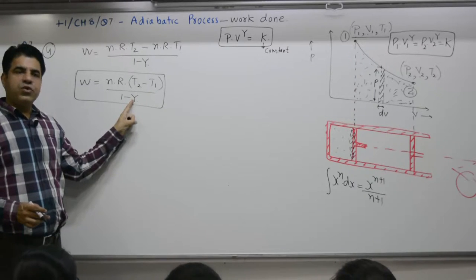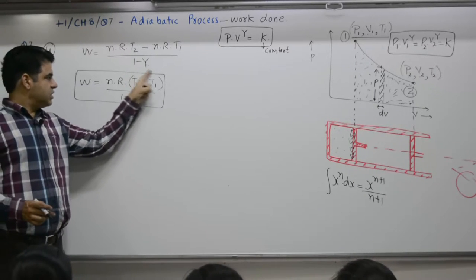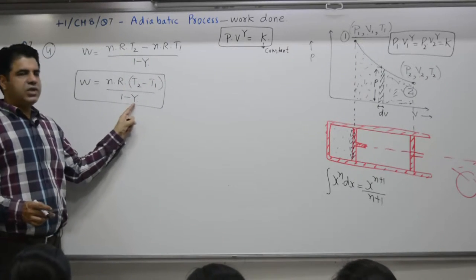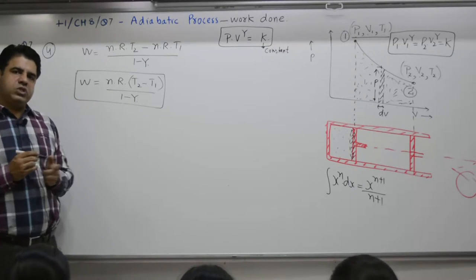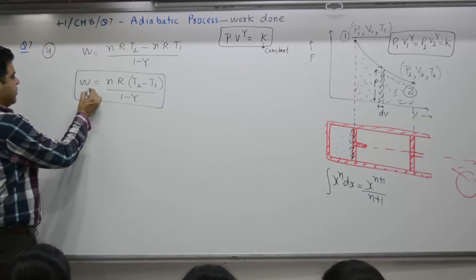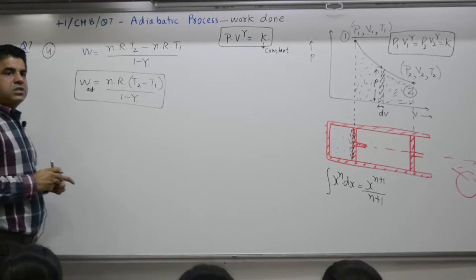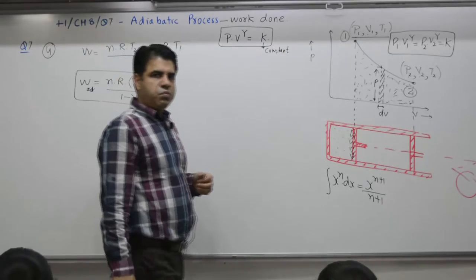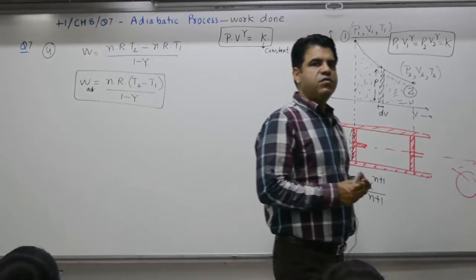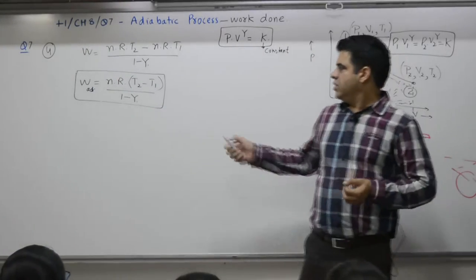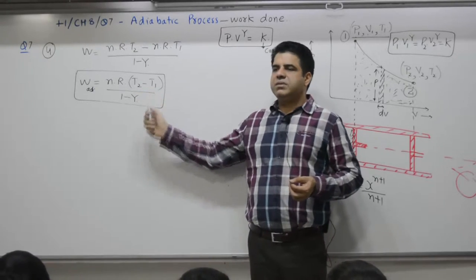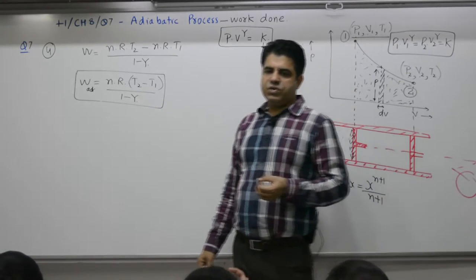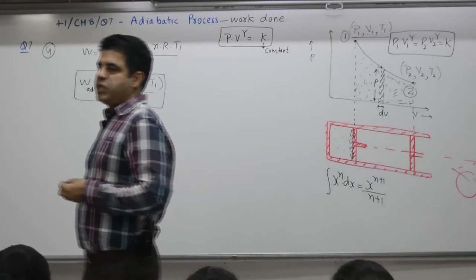Gamma is 1.4, this is also negative. So numerator is negative, denominator is also negative, so the work overall comes out to be positive. Objective question: work done in adiabatic process is proportional to pressure difference, temperature difference, volume difference, final temperature T2, or initial temperature T1? So it is proportional to temperature difference.